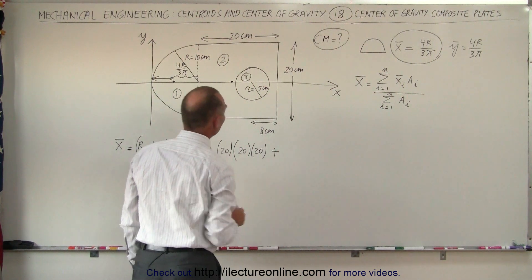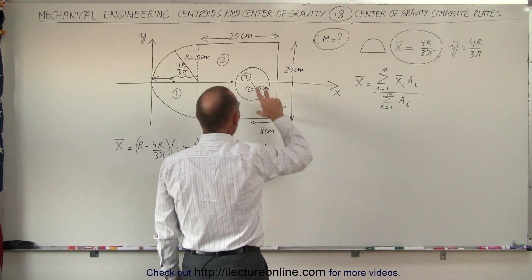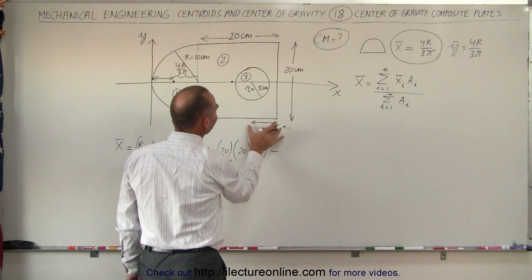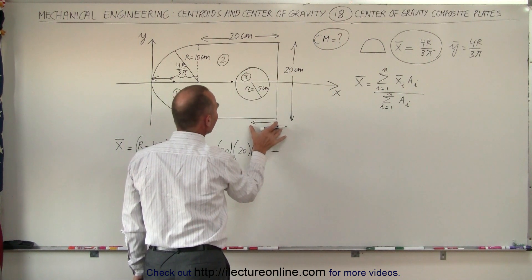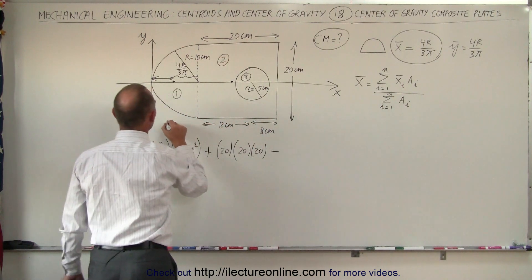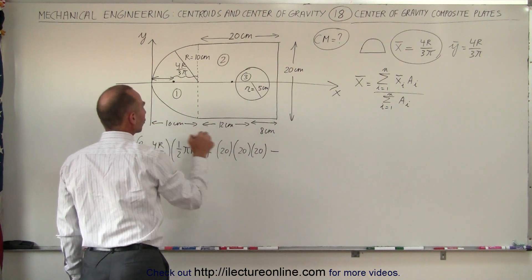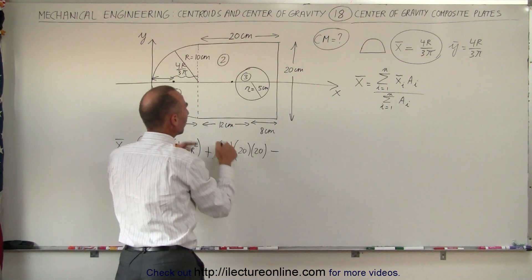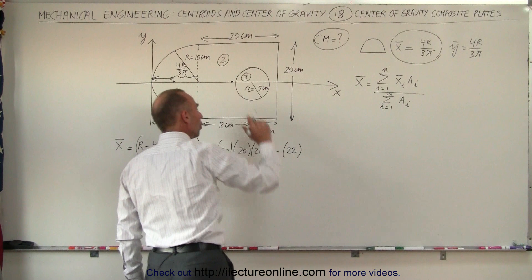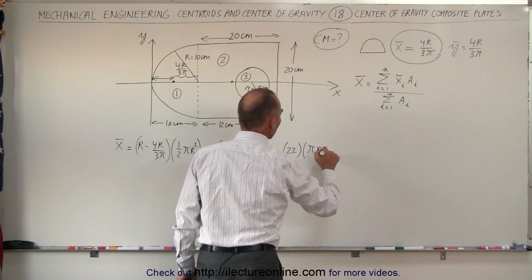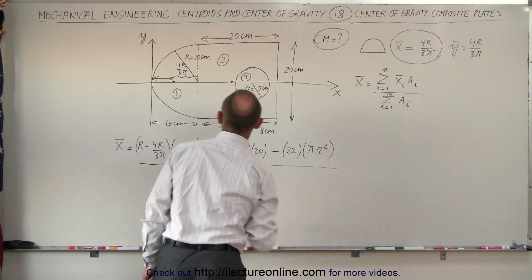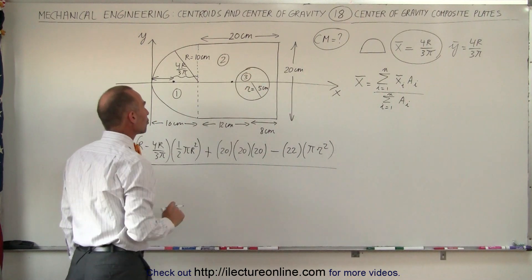Finally, we need to subtract the hole. Where is the center of mass of the hole? The center of the hole is 8 centimeters from the end, which means that if this is 20 centimeters, that place is at 12 centimeters from the left side. Since the semicircle contributes 10 centimeters, the x-coordinate of the center of mass of the hole is 10 plus 12, which is 22 centimeters from the origin. We multiply that times the area of the hole, which is π r squared. The hole gets subtracted from the sum.